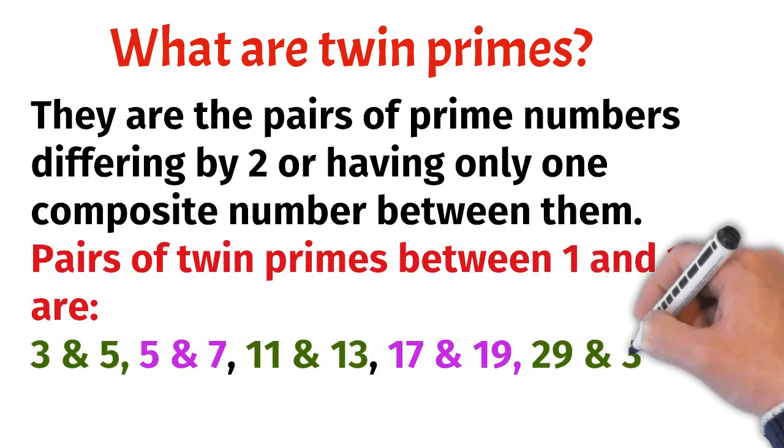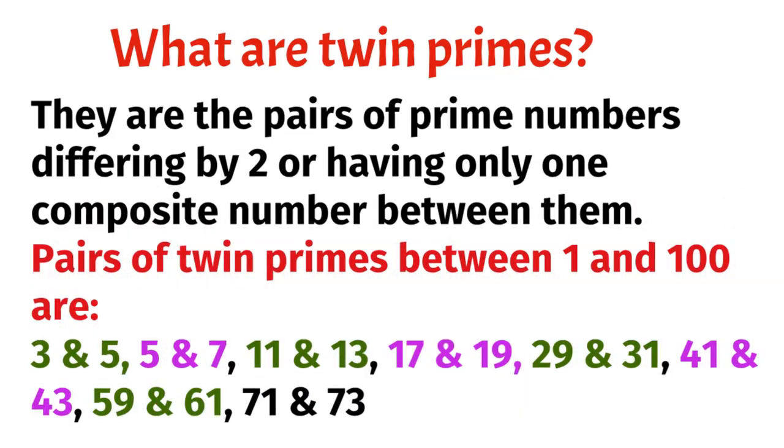Pairs of twin primes between 1 and 100 are 3, 5; 5, 7; 11, 13; 17, 19; 29, 31; 41, 43; 59, 61; 71, 73.